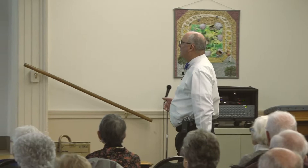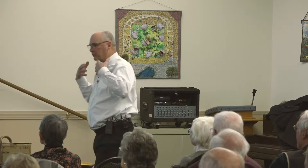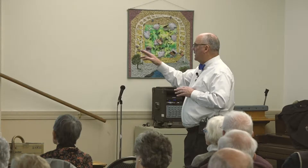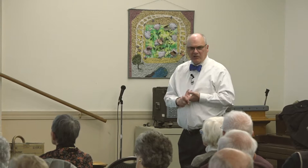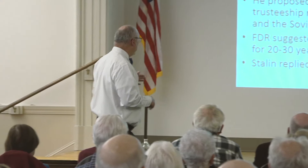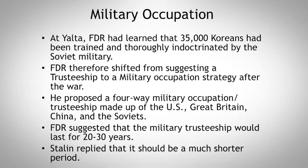Military occupation: at Yalta, FDR — who was very ill and not healthy — learned that 35,000 Koreans had been trained and thoroughly indoctrinated by the Soviet military. He therefore shifted from suggesting a trusteeship to a military occupation after the war. He proposed a four-way military occupation made up of the United States, Great Britain, China, and the Soviets — not unlike what was happening in Germany and Berlin. FDR suggested the military trusteeship would last 20 to 30 years, and Stalin said that was way too long. The U.S. plan for Korean independence was a three-step process: first a joint military occupation by the Allied powers; second, establishment of a military government under a single unified administration; and third, transfer of authority to a provisional Korean government under supervision of the trustees.